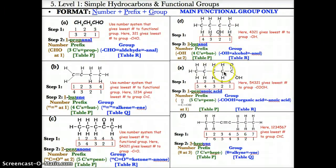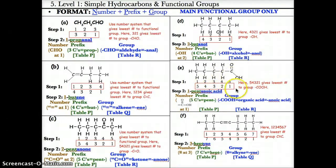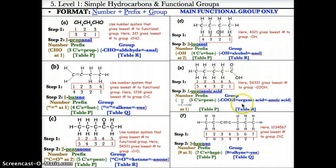Example E: a structure with a COOH group. Step one: number the carbons forward 1, 2, 3, 4, 5 and backwards 5, 4, 3, 2, 1. Step two: the functional group is COOH. The lowest location is 1 because 1 is less than 5, so use the backwards system 5, 4, 3, 2, 1. The prefix is pent- because there are 5 carbons; the group ending is -anoic acid because COOH is an organic acid, which has the ending -anoic acid based on table R. The name is 1-pentanoic acid.